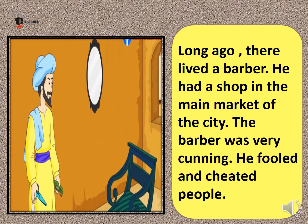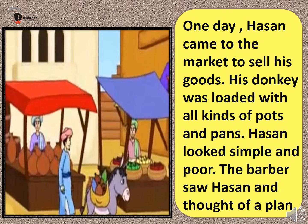So long ago there lived a barber who had a shop in the main market of the city. One day Hassan came to the market to sell his goods — his donkey was loaded with all kinds of pots and pans. Hassan looked very simple and poor. The barber saw Hassan and thought of a plan to fool him, because the barber liked to fool people.